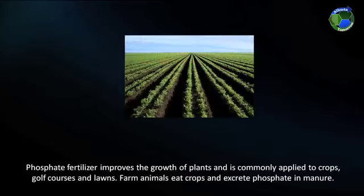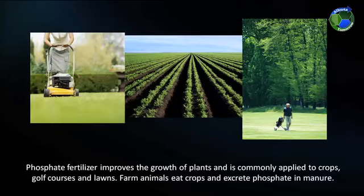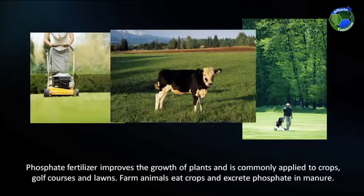Humans mine phosphate rock to make fertilizer. Phosphate fertilizer improves the growth of plants and is commonly applied to crops, golf courses, and lawns. Farm animals eat crops and excrete phosphate in manure.